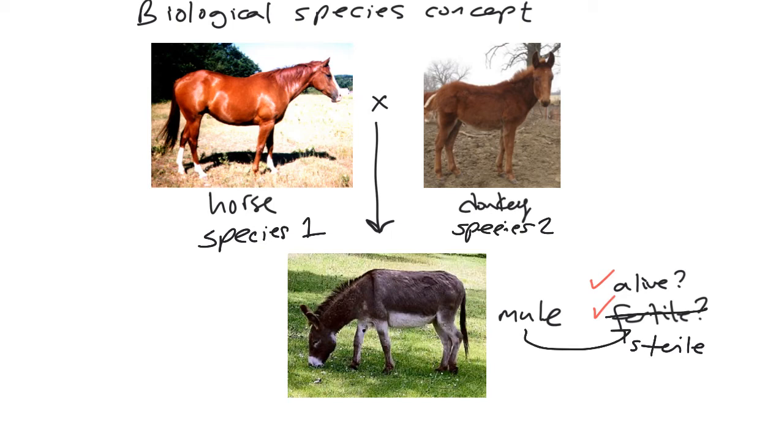There are other species concepts or definitions that exist, but this is the one that most biologists are familiar with and tend to use, except for in extreme cases, like cases of organisms that don't have sex, like bacteria.